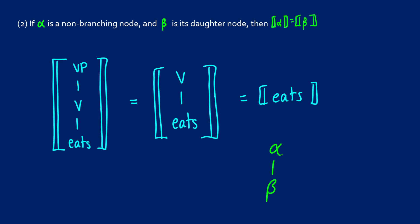So what this means is that the meaning of the verb phrase is going to be dependent on the meaning of the verb because the verb phrase only has one daughter, and the meaning of the verb is going to be dependent on the meaning of eats because the verb only has one daughter.